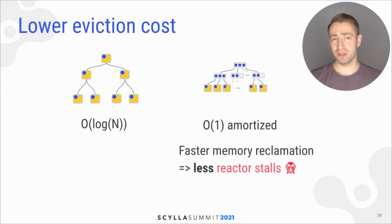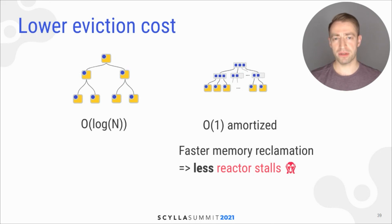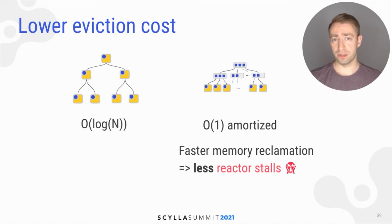Another important benefit of the new B-tree structure is that the eviction cost is much lower. Eviction happens when we have to remove data from cache to make room for new requests. And if your request for memory is large, then you have to evict a lot of entries, so it matters.